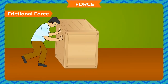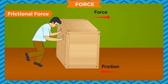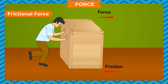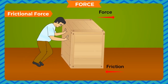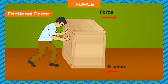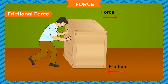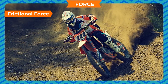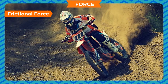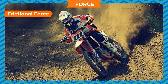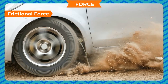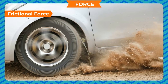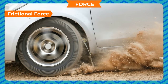Frictional Force: The force of friction acts on moving objects and its direction is opposite to the direction of motion. The force of friction arises because of contact between surfaces. You will learn more about it in the next chapter on friction.